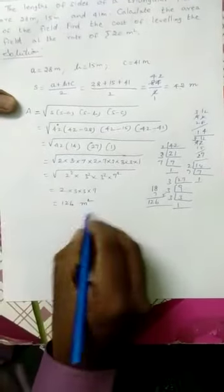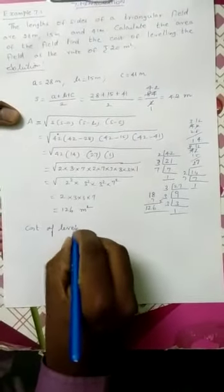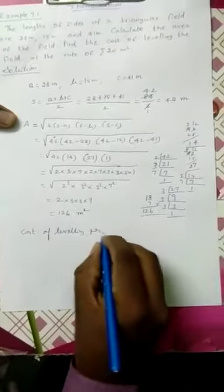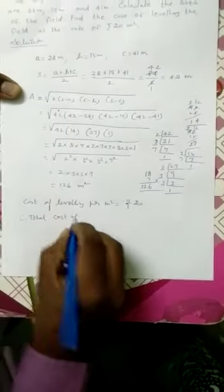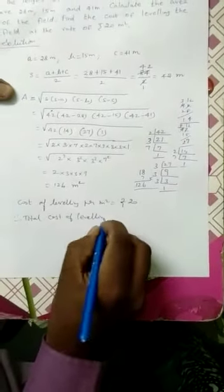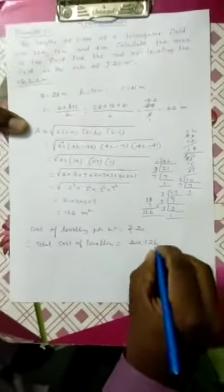That means the area unit is meter square. The next one: cost of leveling per meter square equals rupees 20. Therefore, the total cost of leveling equals 20 times the total area, 126.